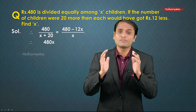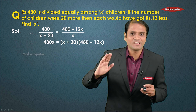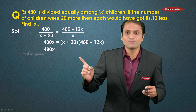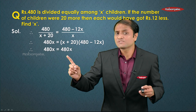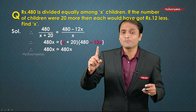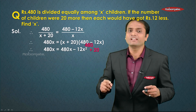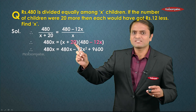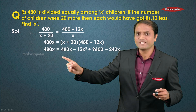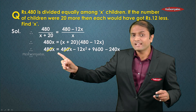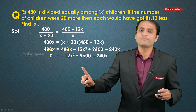Both are binomials, so we introduce brackets: 480x equals (x plus 20)(480 minus 12x). Expanding the RHS: x times 480 gives 480x, x times minus 12x gives minus 12x², 20 times 480 gives plus 9600, and 20 times minus 12x gives minus 240x. Since 480x appears on both sides, it cancels, leaving zero on the LHS.